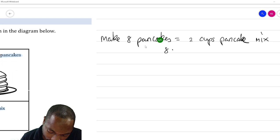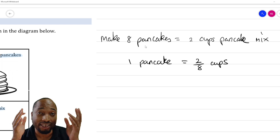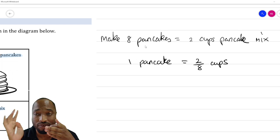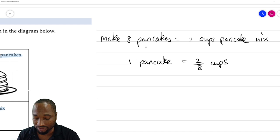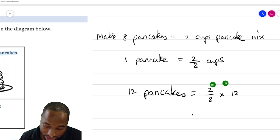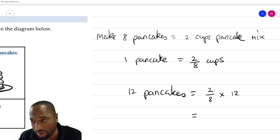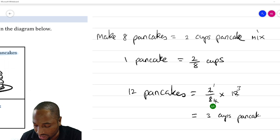Eight pancakes require two cups of pancake mix — it's a ratio, and ratios are really glorified fractions. Using the 'find for one' key: to make one pancake you need two over eight cups. Finding for one is always a division process — like three mangoes cost fifteen dollars, so one mango costs fifteen divided by three. So for twelve pancakes: take two over eight, multiply by twelve, and that gives three cups of pancake mix.